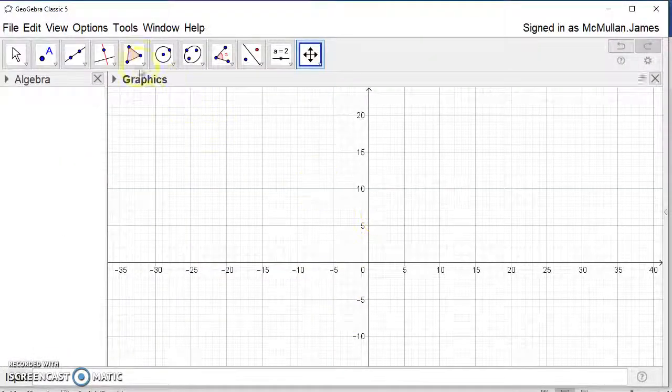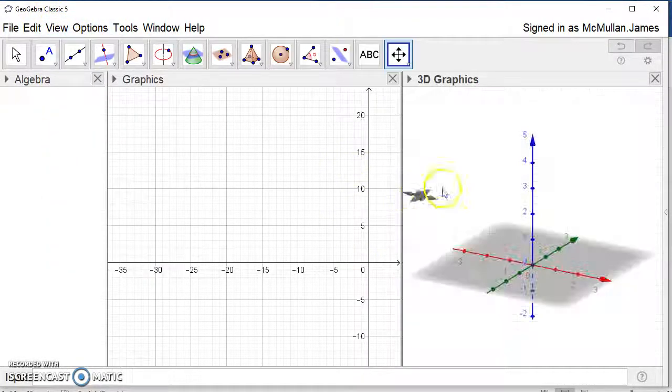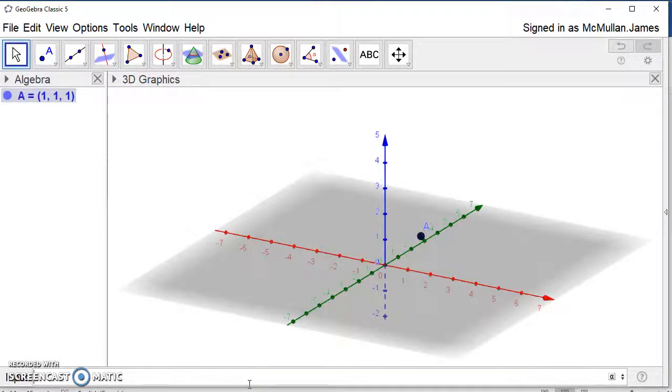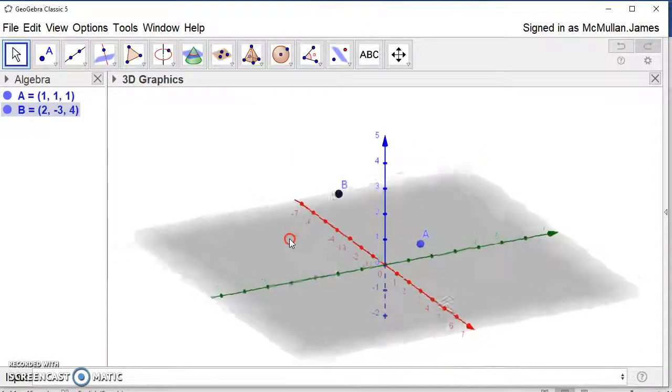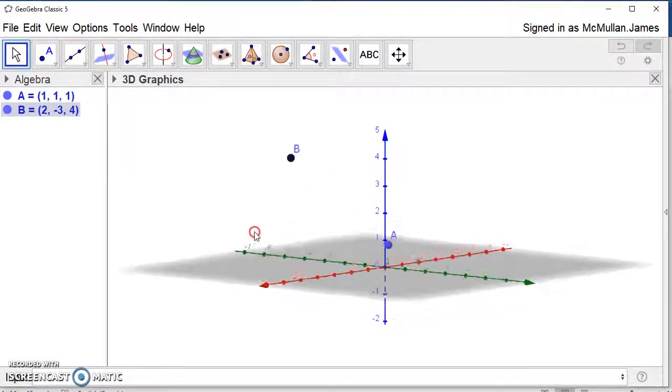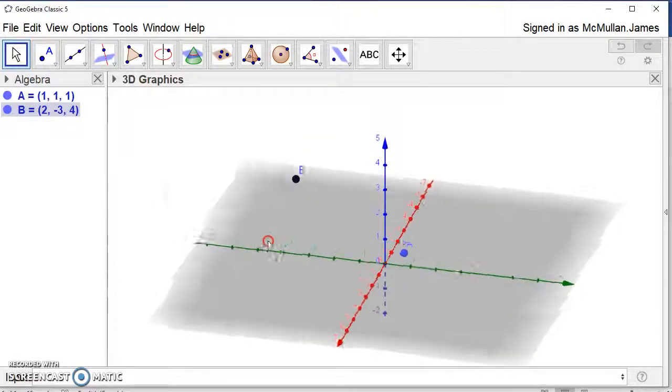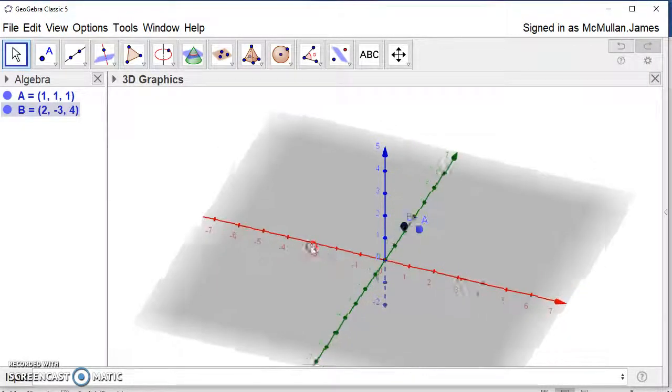In GeoGebra, you can look at this. You just go to View and then 3D Graphics, and that will call up our 3D axis here. And if we make two random points, so A is (1,1,1) let's say, and B is (2,-3,4). Now when I look at A and B, I can see that it is possible to put a plane between these two, but it is also possible to put many other possible planes between these two.